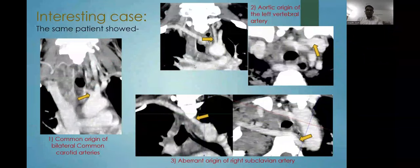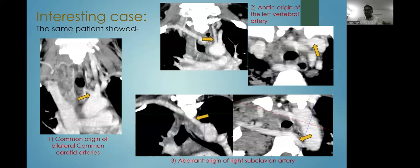We had an interesting case in which, marked in yellow on the left side, we see a common origin of bilateral common carotid arteries. On the top right we see the aortic origin of the left vertebral artery, and on the bottom right an aberrant origin of the right subclavian artery — all three findings in the same patient.